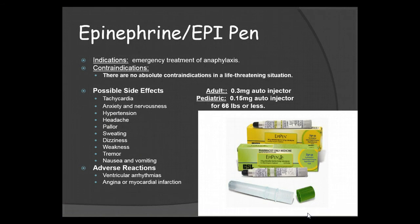Next we have the EpiPen. The indications for an EpiPen are emergency treatment of anaphylaxis. There are no absolute contraindications for an EpiPen in a life-threatening situation. The EpiPen does come with quite a few side effects: potentially tachycardia, anxiety and nervousness, hypertension, headache, pallor, sweating, dizziness, weakness, muscle tremors, nausea, and vomiting. Severe adverse reactions to keep an eye out for are ventricular arrhythmias, angina, or myocardial infarction — this is a rare reaction but it does happen. Always be aware of your patient's status.